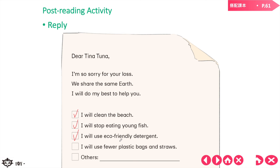I will use fewer plastic bags and straws — 我會減少使用塑膠袋及吸管。That's super easy. I've been reusing plastic bags and using reusable straws. I will reduce them even further. 就算有時候忘記買了塑膠袋，我也會重複使用它，或丟入回收，所以可以重複使用。最後 Others — 大家可以幫我想一想，What other things can you do to help Tina Tuna, to help the ocean?